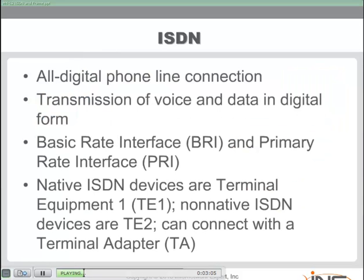ISDN is a technology that allows us to take the phone line and communicate in a purely digital mode over what is traditionally an analog phone line connection. Voice and data can both be transmitted digitally over the public switched telephone network.